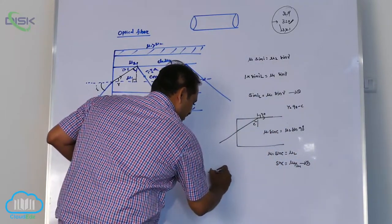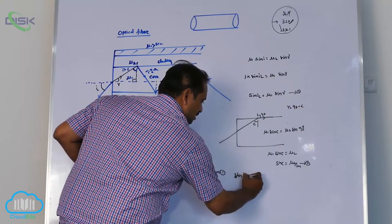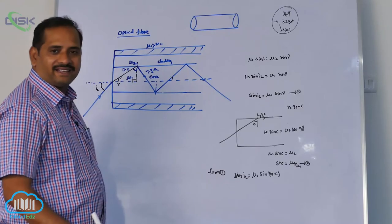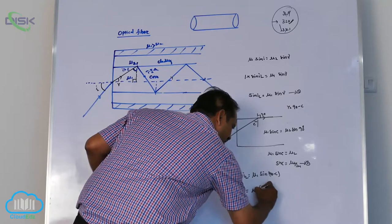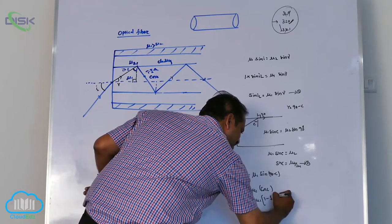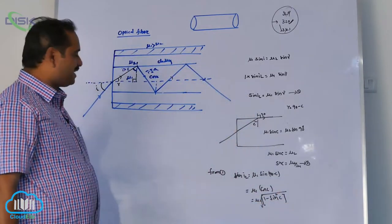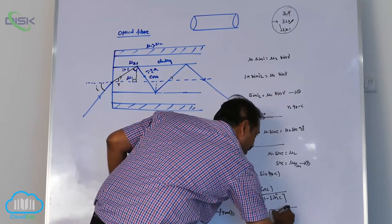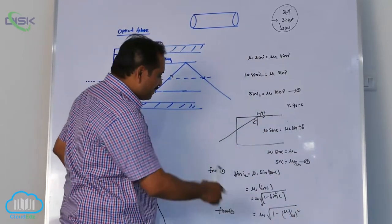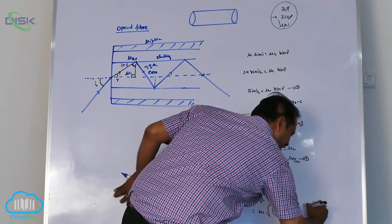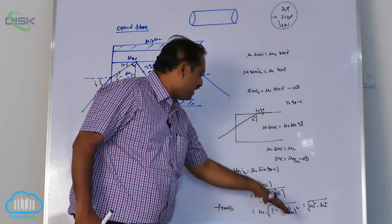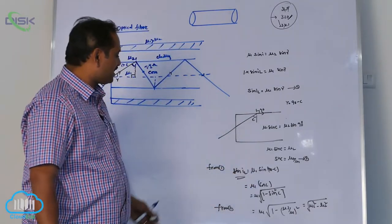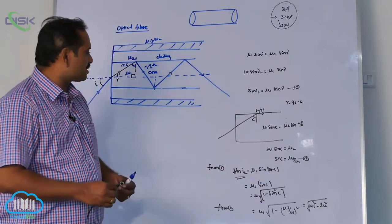Then, from equation 1, sin IL equal to glancing angle equal to mu1 into sin(90-C). Sin(90-C) is cos C. Mu1 into cos C. What I can write, 1 minus sin square C under root, because cos square theta plus sin square theta equal to 1. From equation 2, mu1 into root of 1 minus (mu2 by mu1) whole square. Make it LCM, mu1 square minus mu2 square under root is glancing angle. Mu1 denominator canceled. This is condition for glancing angle. Sin IL equal to root of mu1 square minus mu2 square is the glancing angle.